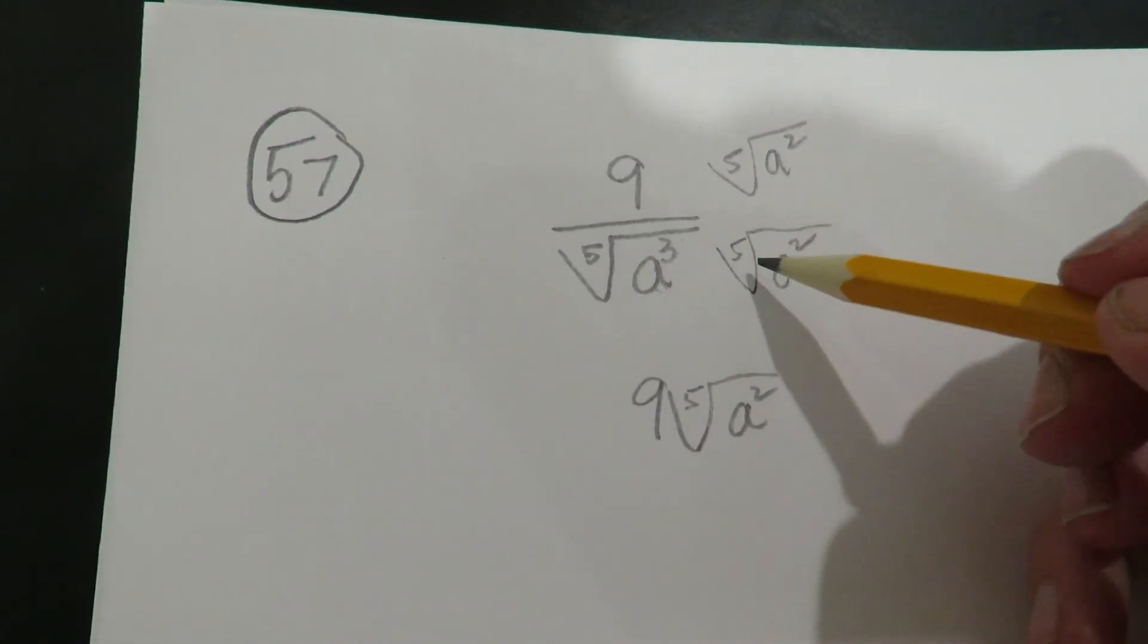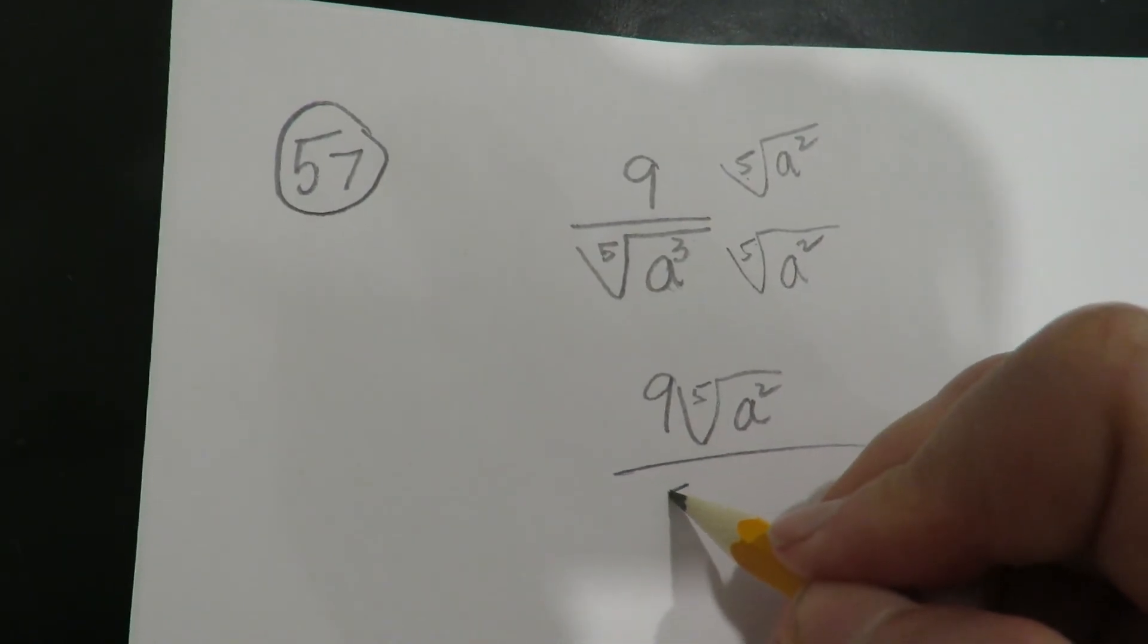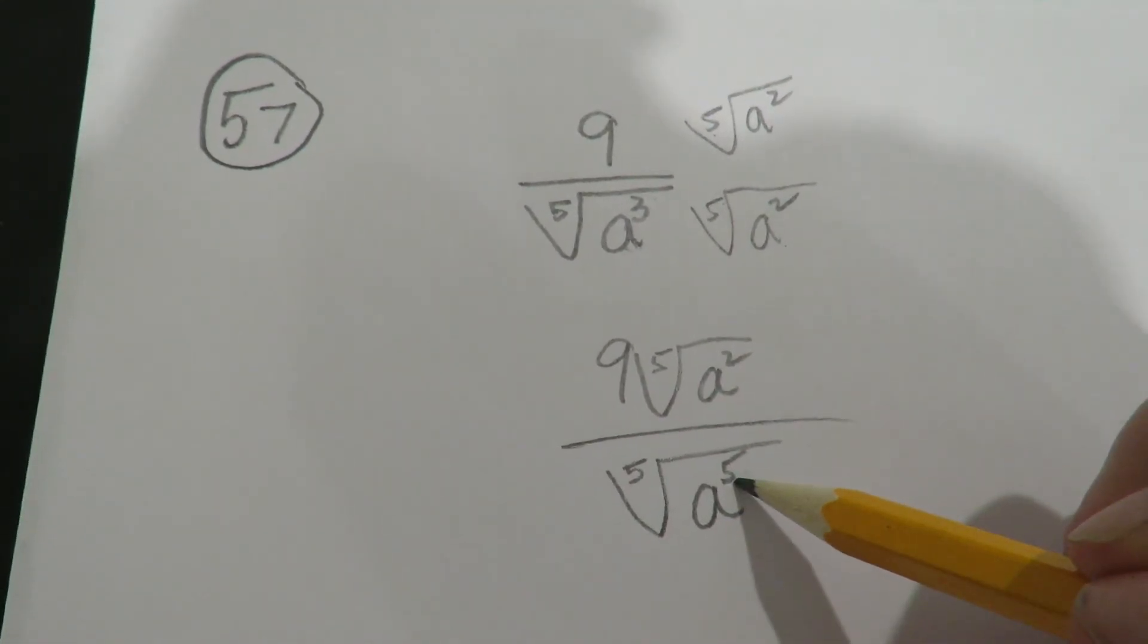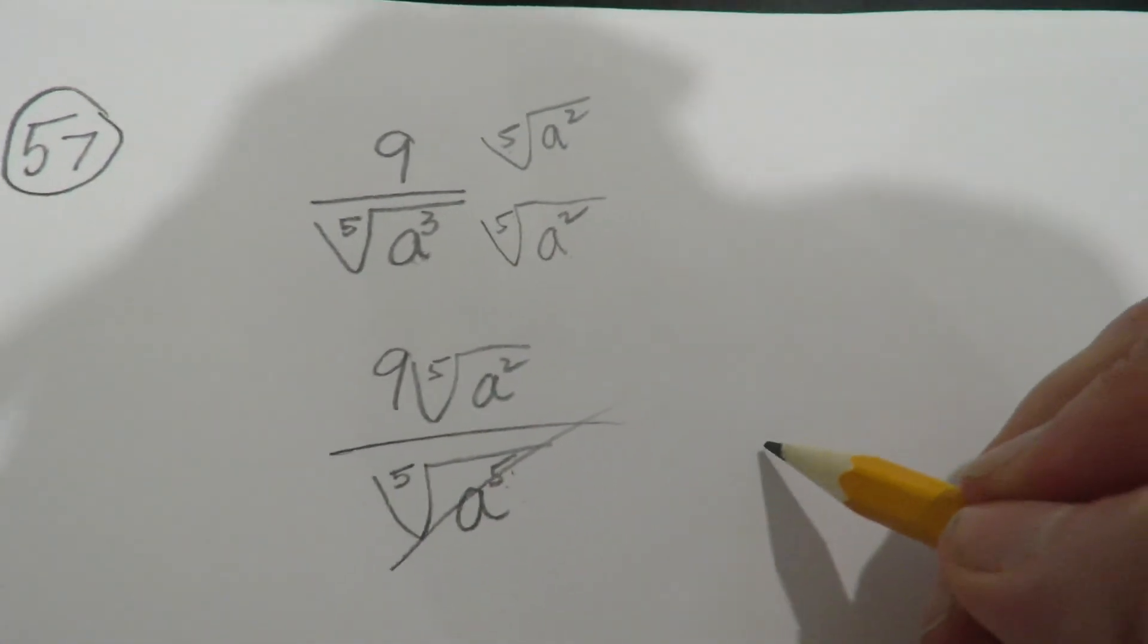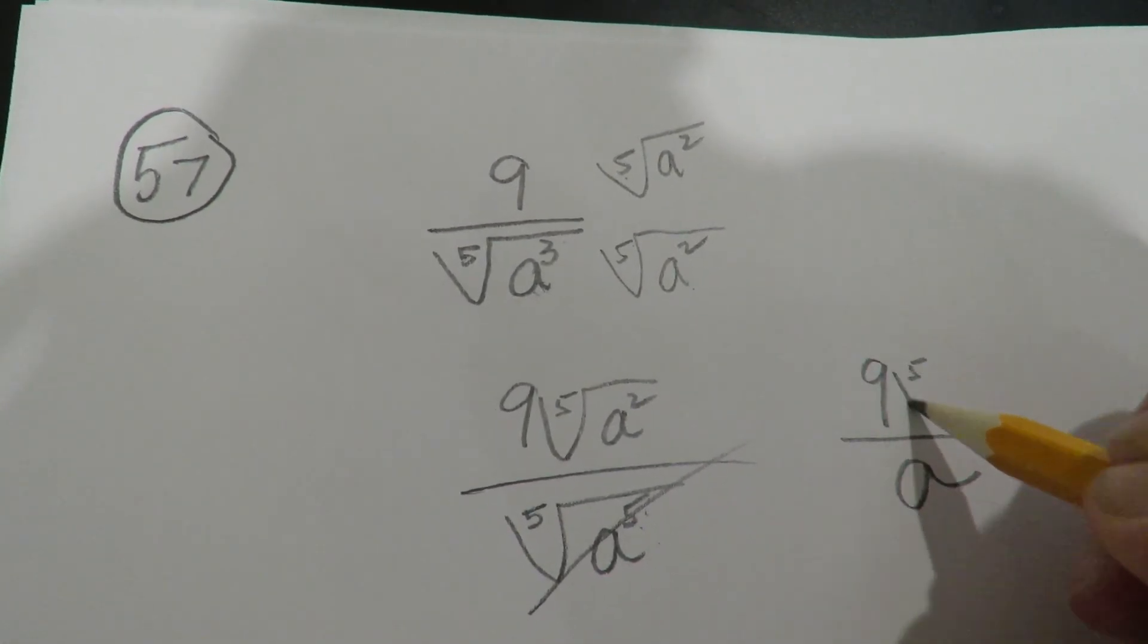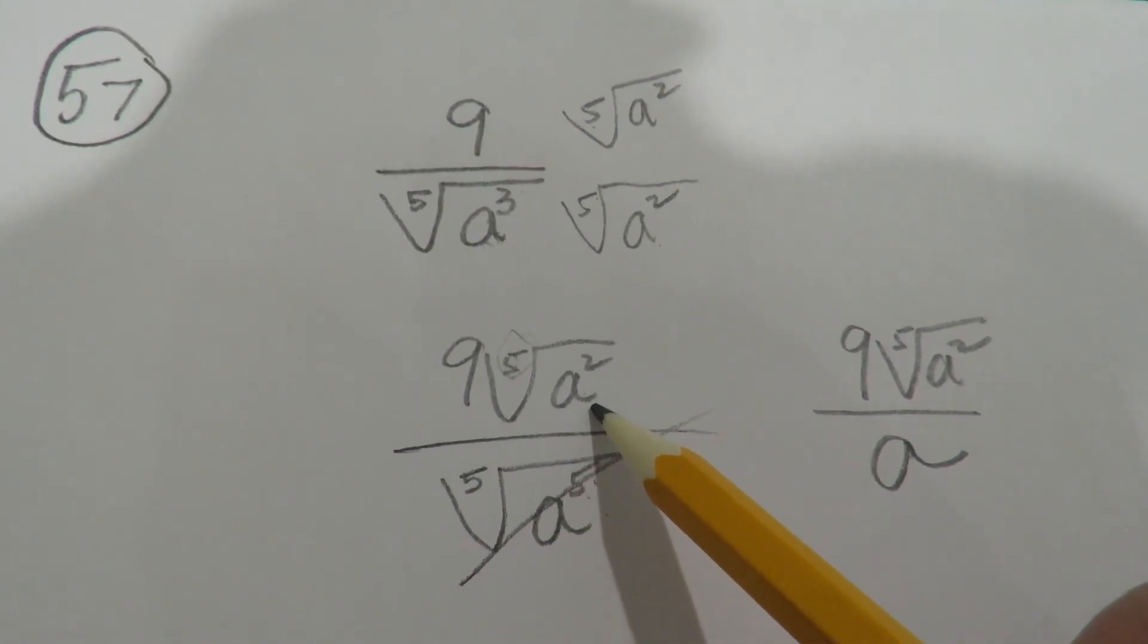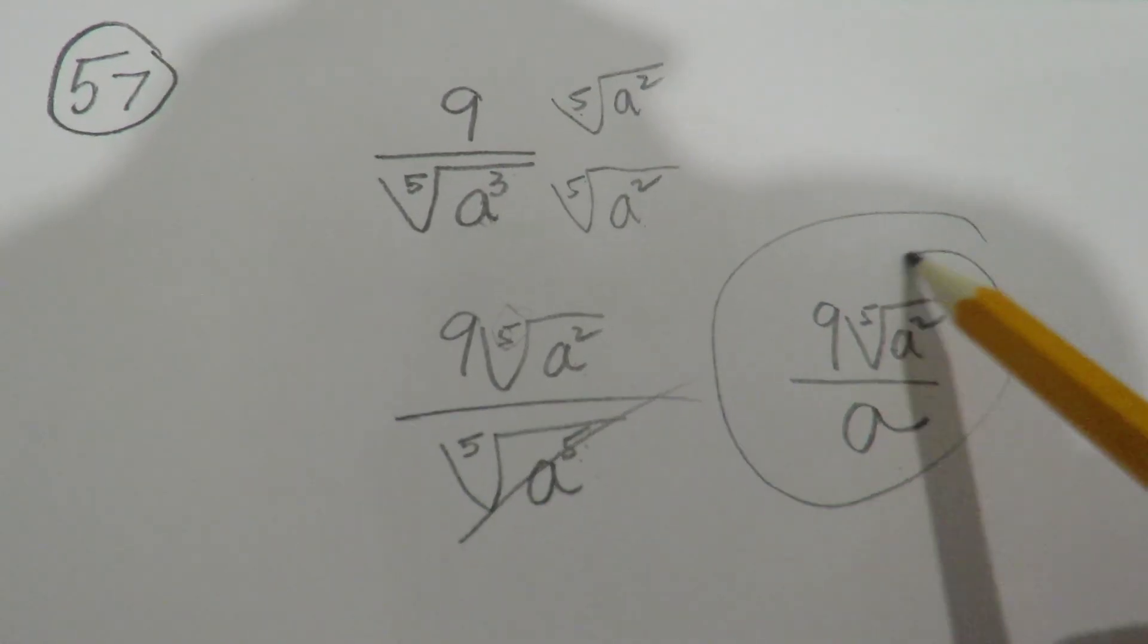And again, don't forget when you balance up and down, you're multiplying up and down by fifth roots. Alright, so now I've made it that three plus two is five. So now this is a perfect fifth, because five divided by five is one. So this can simplify out as an a. And again, it's so important because I'll see students forget to put the little five here, and then they'll think this is a square root, and they'll simplify this, which is wrong. Okay, so the numerator doesn't simplify, the denominator does.